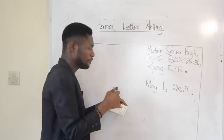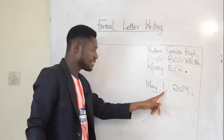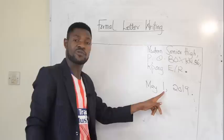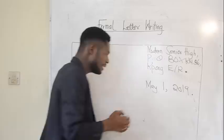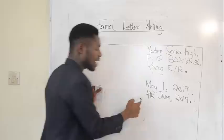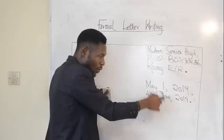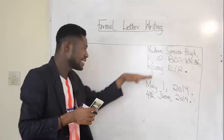Take note: when the month precedes the date, the date becomes cardinal. So we don't say 'June 4th' — it's wrong to say 'June 4th' because you are bringing the month before the date. It becomes 'June 4.' However, if you bring the date before the month, then it's acceptable to write '1st June.' There should always be a comma after the month or the date, depending on which precedes the other. The date is separated from the address, so it should be separated when writing it.